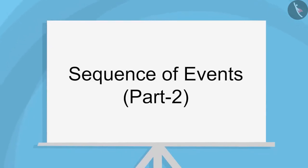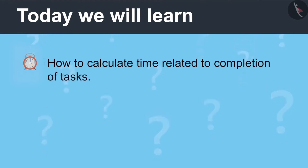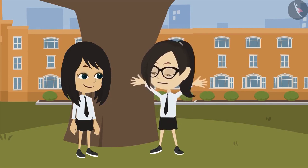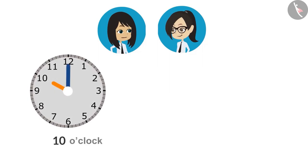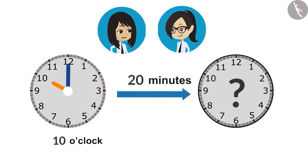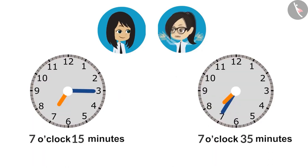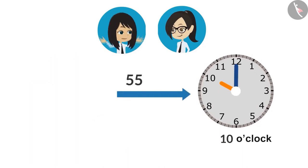Sequence of Events Part 2. Today we will learn how to calculate time related to completion of tasks. Last time we learned 3 things: first, if the start time of a task and how much time it takes is known, we can tell the end time. Second, if the start time and end time are known, we can tell how much time it takes. Third, if the end time and duration are known, we can tell the start time.